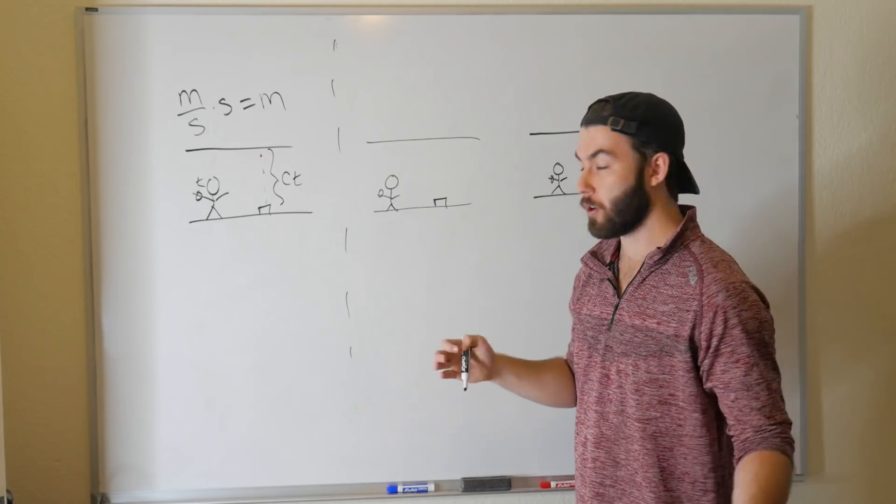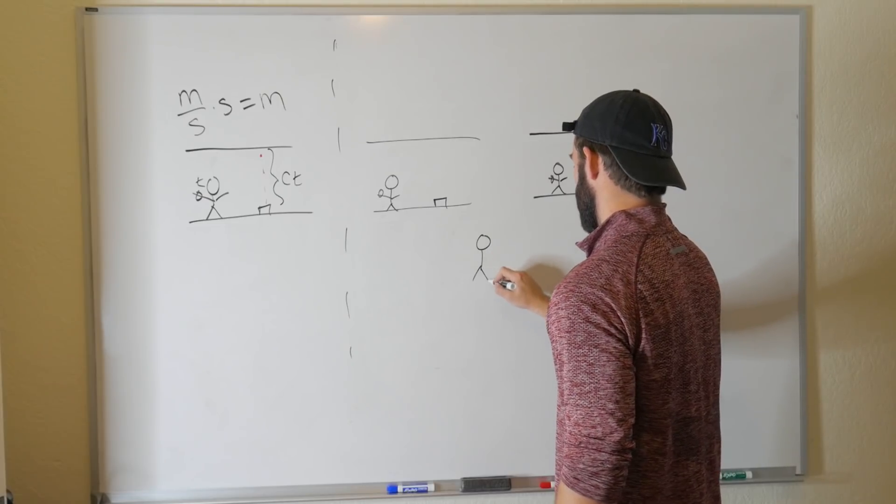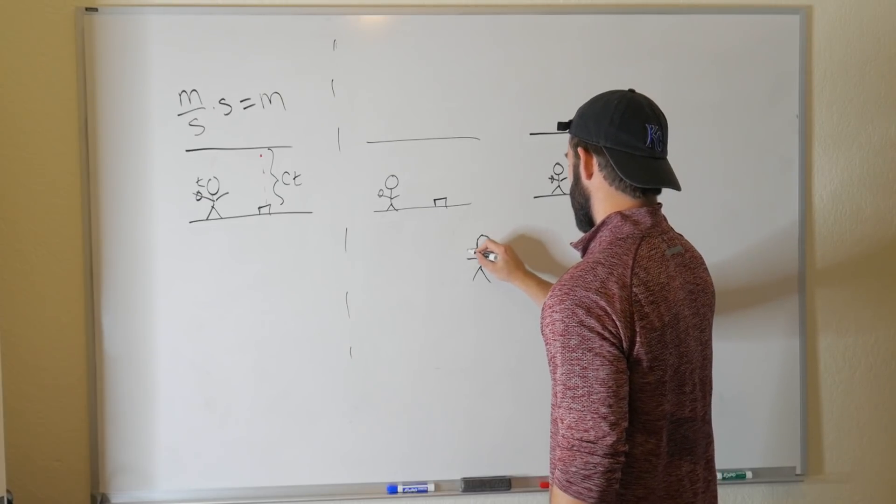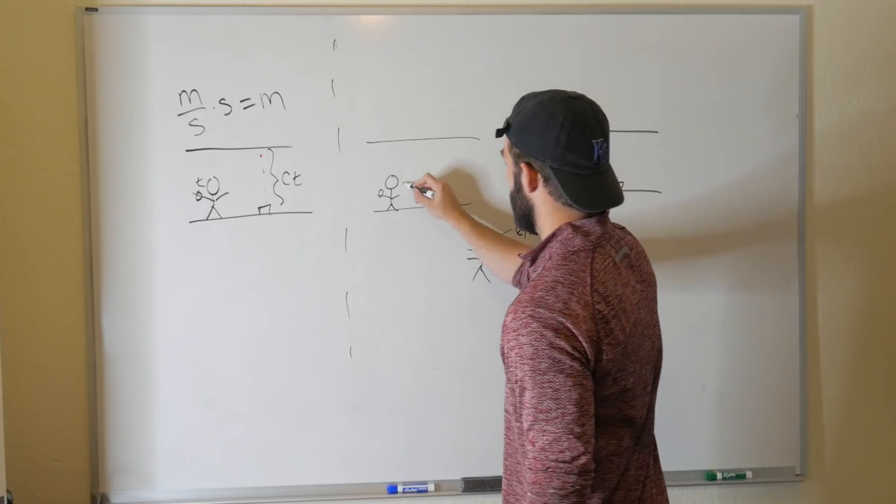And then we're going to put a person, an outside observer, watching this happen. So here's our person, they look alike, let's make it a girl, her name is Greg, we're so crazy. This is Allison.